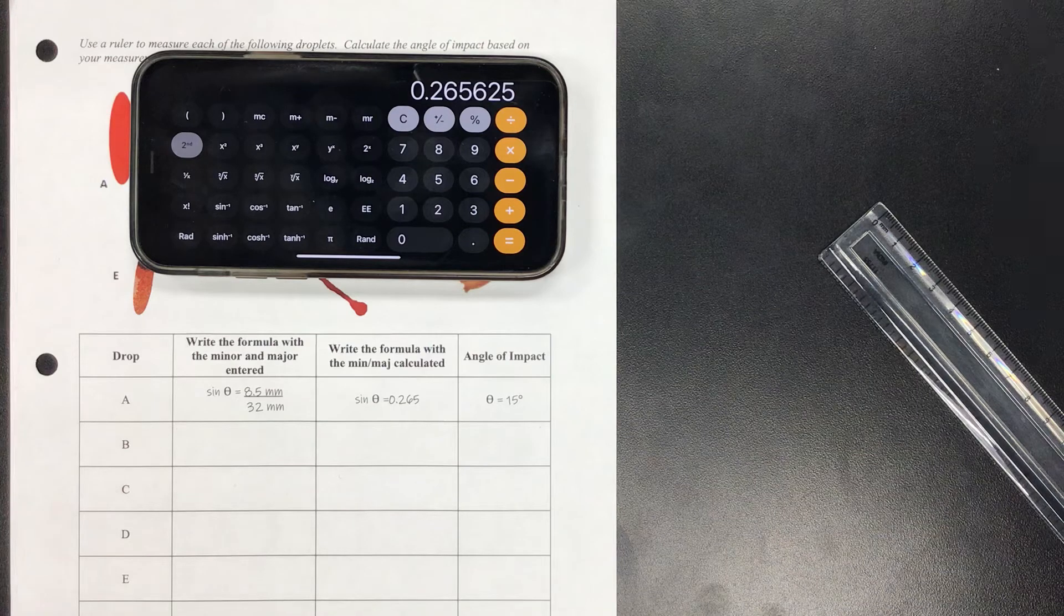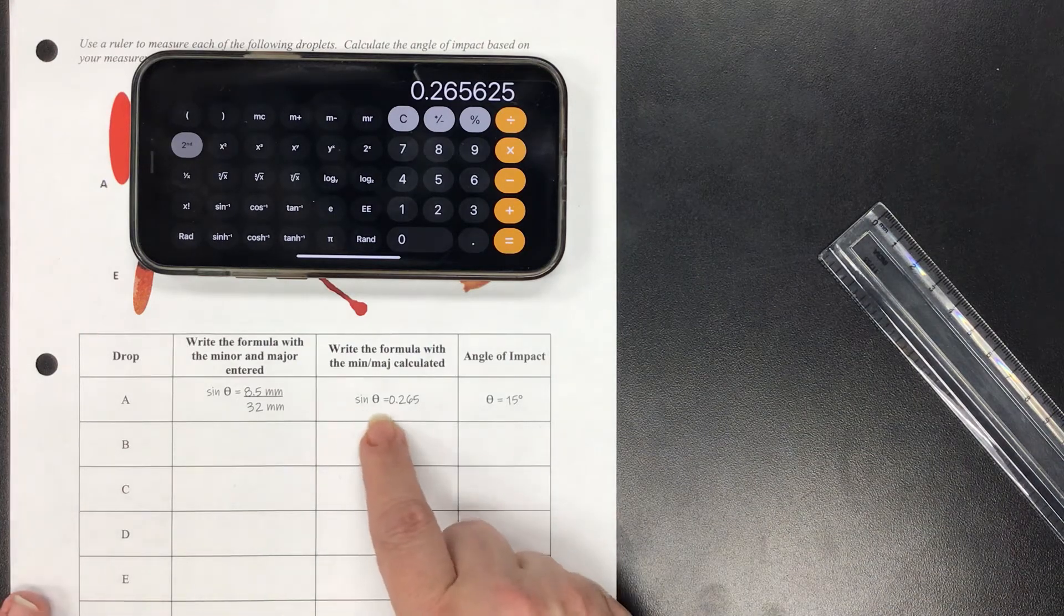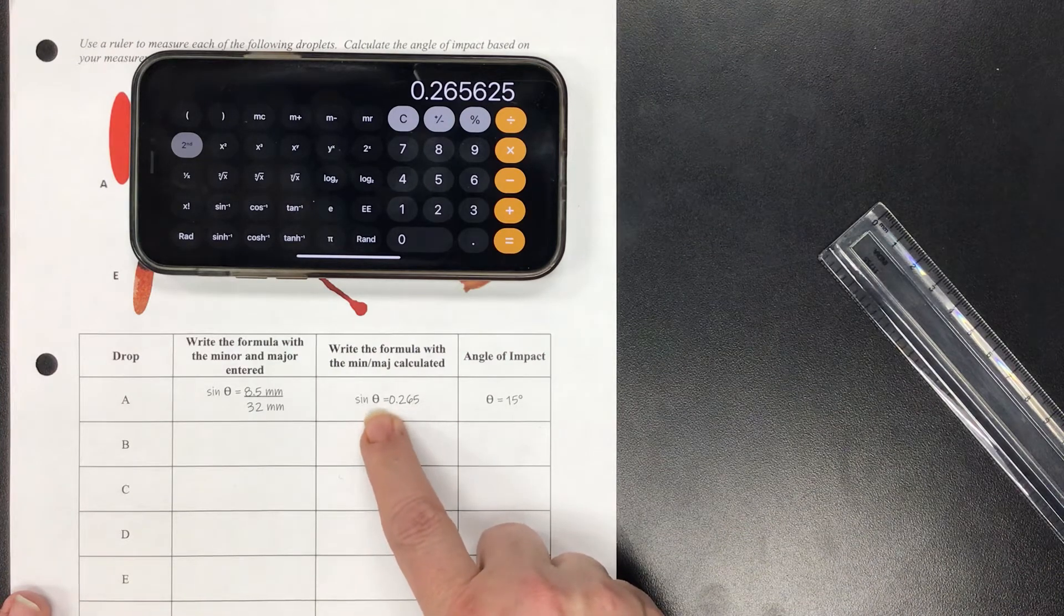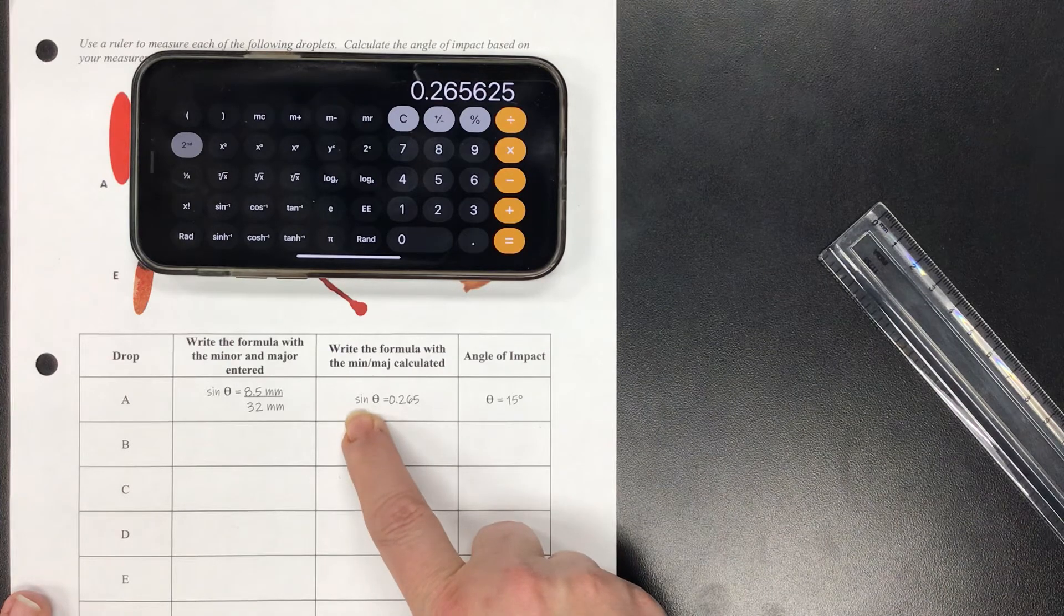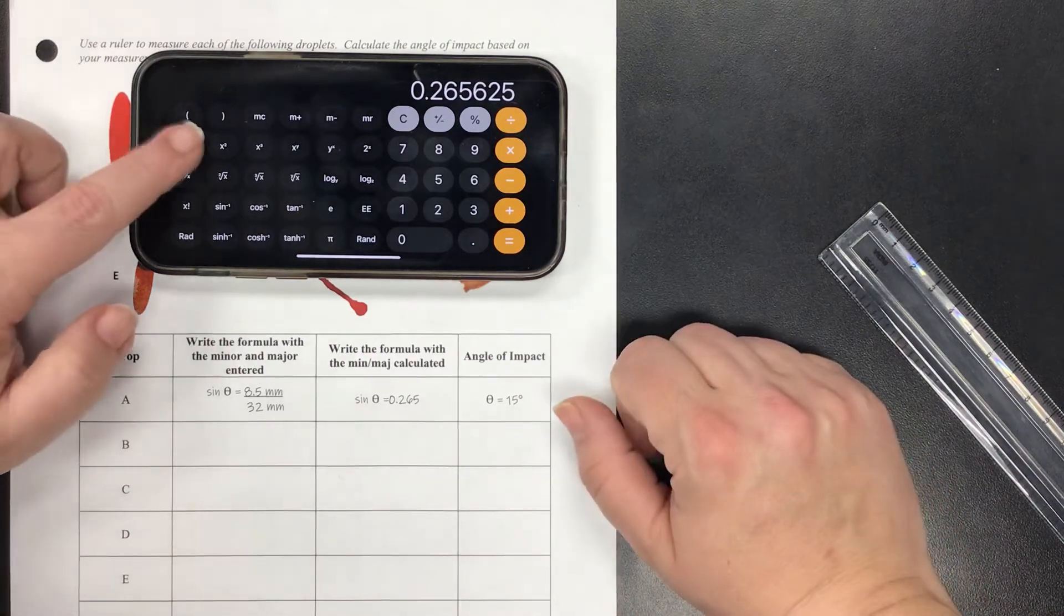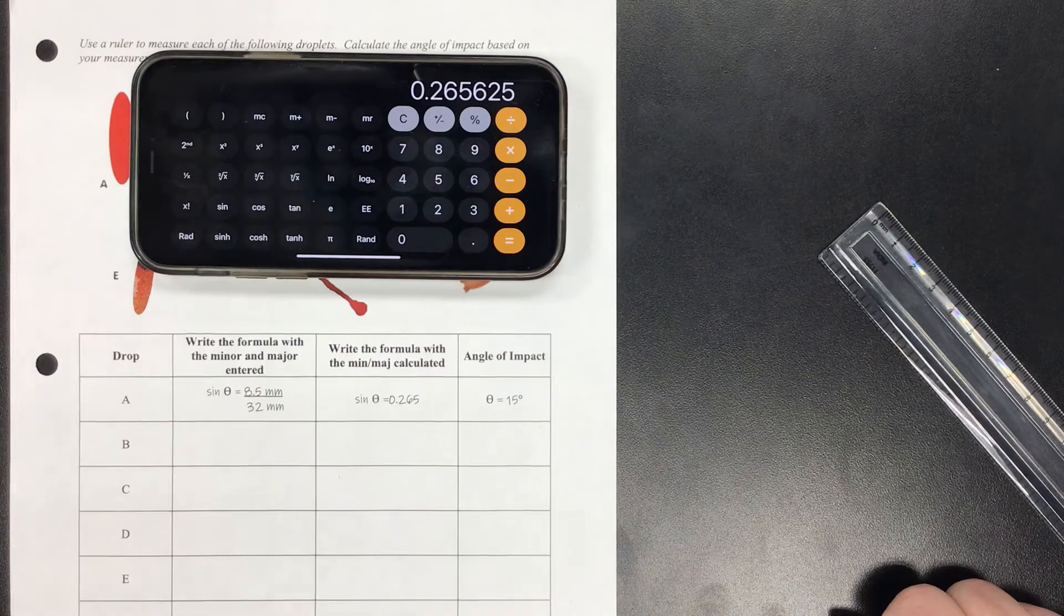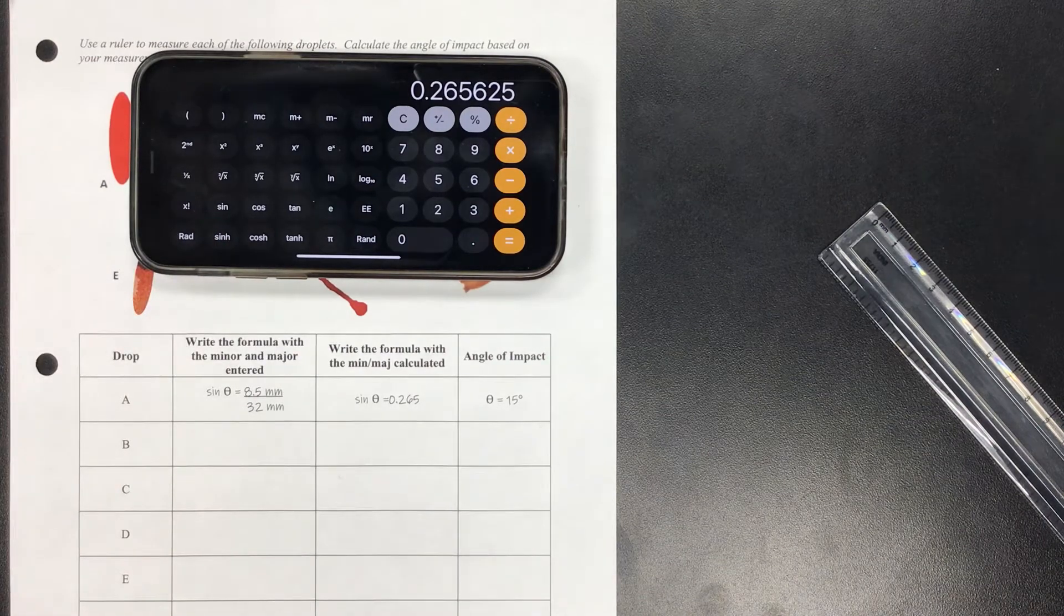So I've got sin(θ) equals this number, but I need to get θ by itself because θ is the angle. So what I need to do is the opposite of sine, and the opposite of sine is an inverse sine or an arc sine. So on my calculator, if you open up your calculator it's going to look like this and you're going to see sine. Well we don't want sine, we want the arc sine or the inverse sine.